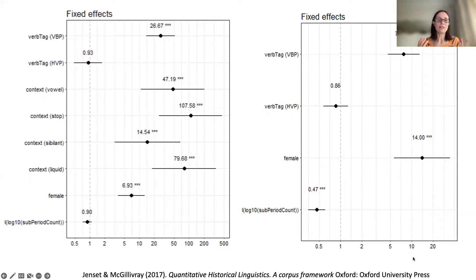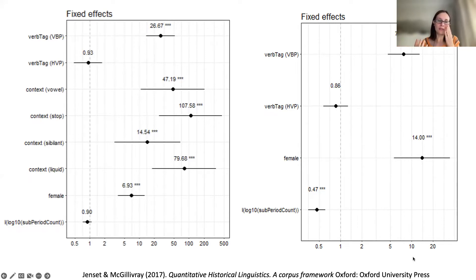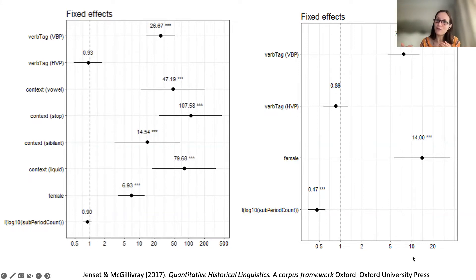We adopted a multivariate analysis technique — specifically a logistic regression model — that looked at this alternation between 'has' and 'hath', and examined different factors that might have affected this alternation: the linguistic and phonological context, the type of verb, the gender of the speaker (since female speakers are known for being particularly innovative), frequency effects, and so on. We were able to quantify all these variables directly. In traditional historical linguistics, these factors are accounted for on an ad hoc, case-by-case, qualitative basis.